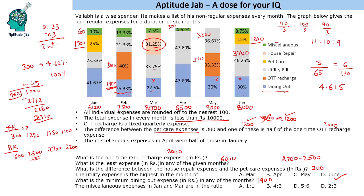Finally, what is the ratio of miscellaneous expenses in January to March? January's miscellaneous is 600. In March, 7.5% of 8000 is also 600. So the ratio is 1:1. That concludes the solution to this set, which involved significant calculation and logical thinking about numbers.